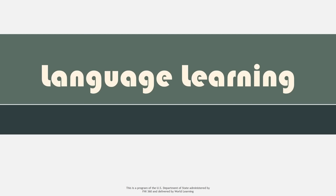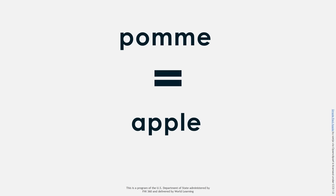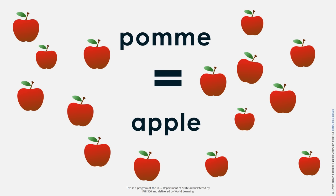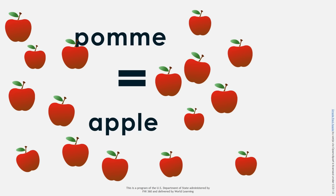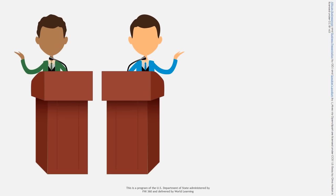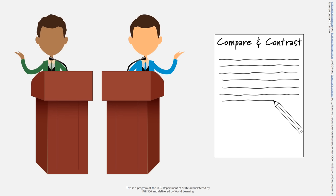Language Learning. Most EFL classes teach students new words to express things that they already know how to express in their first language. In CBI classes, by contrast, it is often not only the words that are new to our students, but also the concepts that they express. Additionally, we teach them to do new, more academic activities with language. When we teach students to debate, for example, or write a compare and contrast essay, we are asking them to express themselves in English in ways they have never done before.